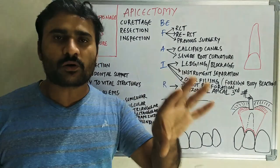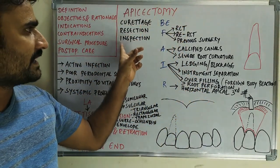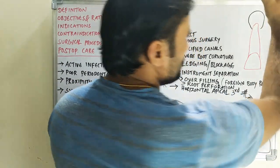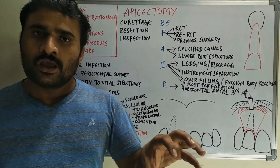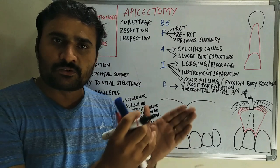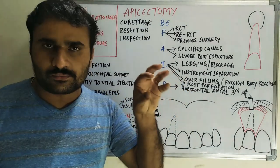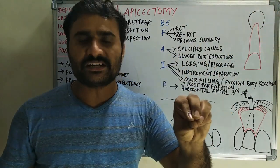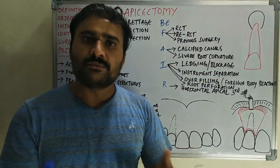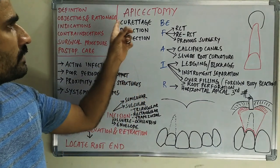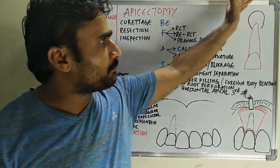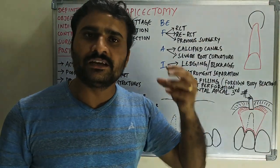There are three objectives or reasons for performing apicectomy. The first is curettage, resection, and inspection. Curettage is indicated when there is periapical pathology. If the periapical pathology is small, root canal treatment will mostly resolve it. But when the pathology is large, or there is improper root canal treatment causing percolation of oral fluids into the periradicular region through the apex, we must surgically expose the root end and perform periradicular curettage to remove the granulation tissue.